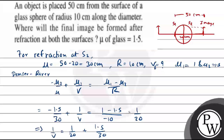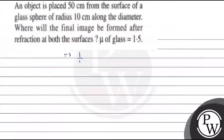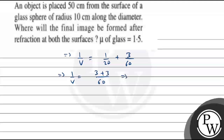This implies 1 over v equals 1 over 20 plus 3 over 60, which equals 1 over 20 plus 1 over 20. So 1 over v equals 6 over 60, which implies v equals 10 cm.